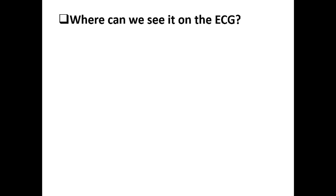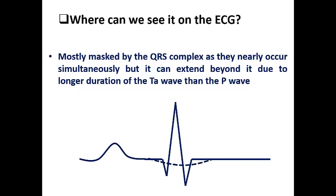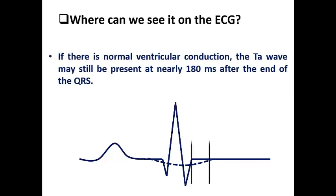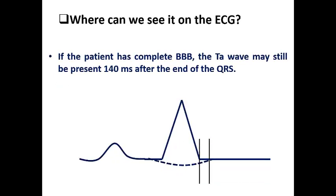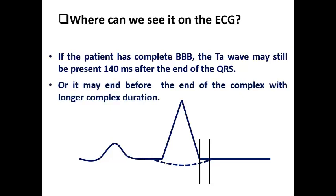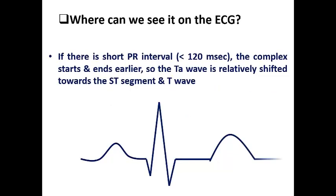The fifth question: where can we see the TA wave on ECG? Regarding timing, it is mostly masked by the QRS complex as it nearly occurs simultaneously, but it can extend beyond the QRS due to its longer duration — twice or triple the P wave duration. It nearly starts before the QRS complex and ends after it, but due to its low voltage it doesn't usually appear. With normal ventricular conduction and narrow QRS complex, the TA wave can be present at about 180 milliseconds after the end of the QRS. In complete bundle branch block with a wide QRS more than 120 milliseconds, the TA wave may still be present at about 140 milliseconds after the end of the QRS, and may even end before the end of the QRS with a longer complex duration.